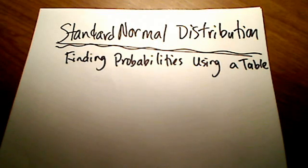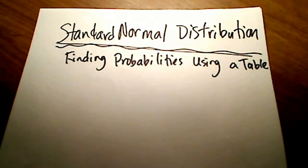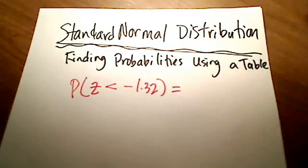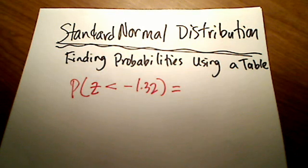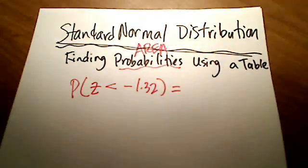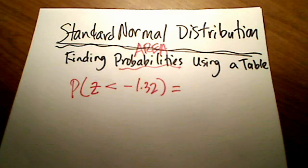In this video, I want to show you how to find, using a standard normal distribution table, how to find probabilities that are of interest. For example, if you are asked to find the probability that z is less than negative 1.32 using a table, how can we actually find that value? A probability is simply an area — an amount of area. The total area under a standard normal distribution bell-shaped curve is equal to 1, so any value we come up with will always be less than 1.